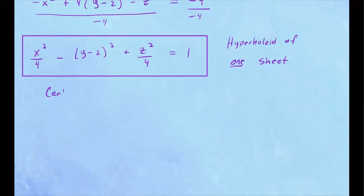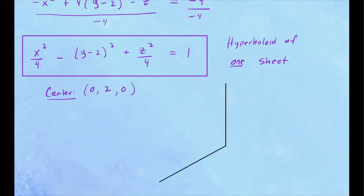The center of this surface is at x equals 0, y equals 2, z equals 0. Since y contains the negative sign, the shape will extend along the y-axis. Here's the coordinate system with x, y, and z axes. We plot the center at (0, 2, 0), which lies along the y-axis. In the x-z plane, ignoring y, we trace a circle of radius 2 — so 2 units left and right in the x direction, and 2 units up and down in the z direction.